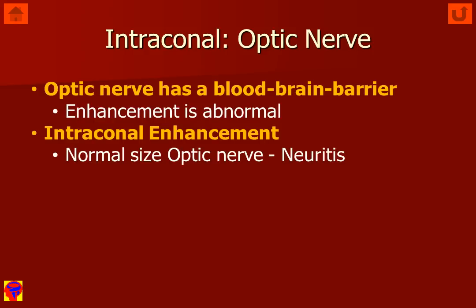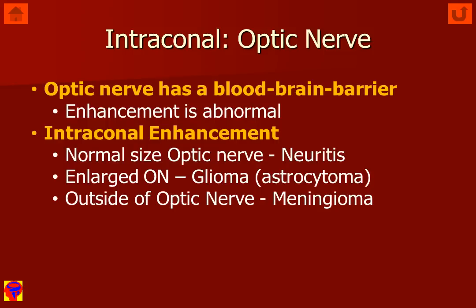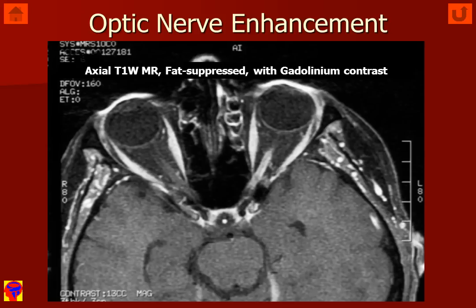If we have intraconal enhancement in the optic nerve and it is of normal size, this may be an inflammation or optic neuritis. If the optic nerve enhances and is enlarged, it may be a glioma, most commonly an astrocytoma. If we have intraconal enhancement around the outside of a non-enhancing optic nerve, this is most likely going to be a meningioma arising from arachnoid cell rests of the optic nerve sheath.